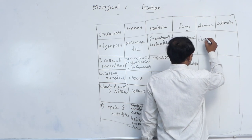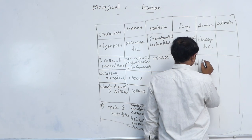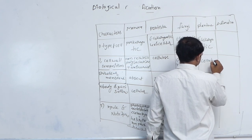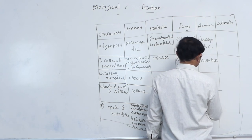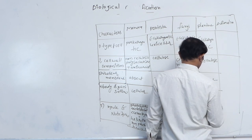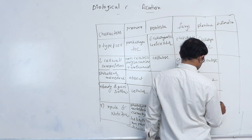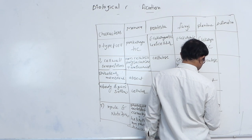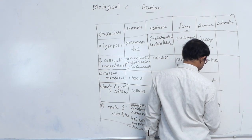For Plantae: it is eukaryotic. Cell wall is made up of cellulose. Nuclear membrane is present. Body organization is tissue system. Mode of nutrition is autotrophic — photosynthetic.